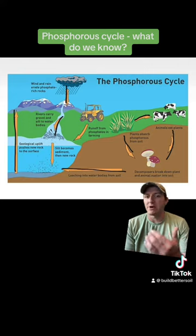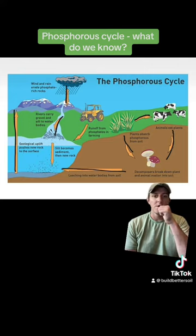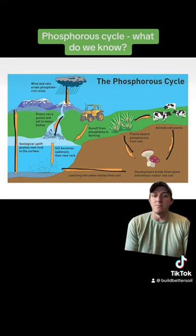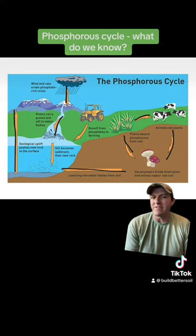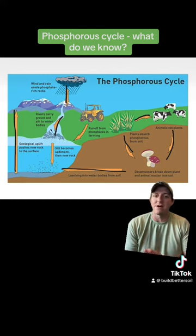But for most people who are in a gardening situation, a horticulture situation, an orchard situation, a food plot situation, they don't have access to that. Even if they have a no-till drill, they're likely not putting phosphorus right in the root zone.